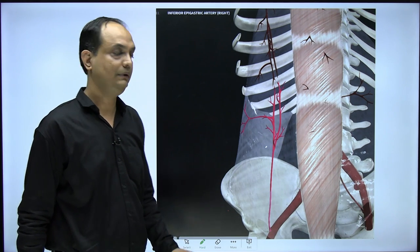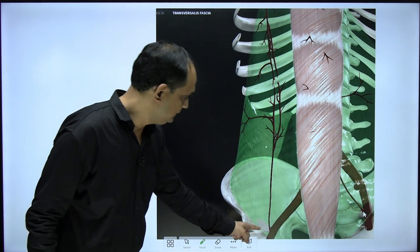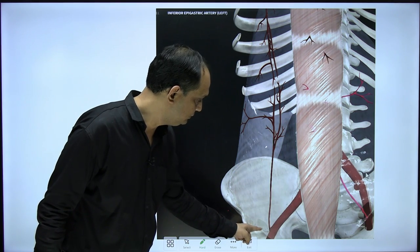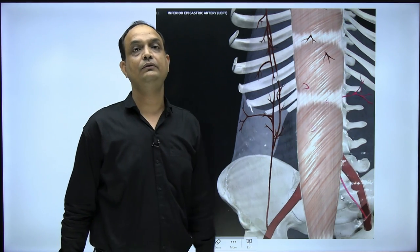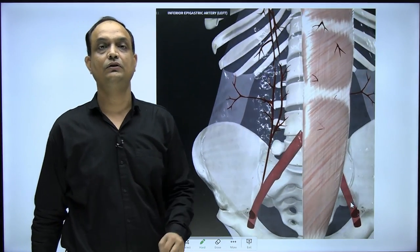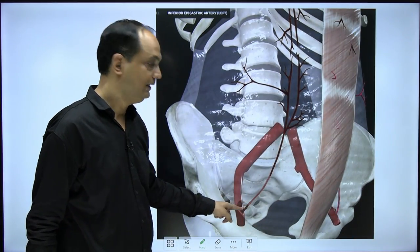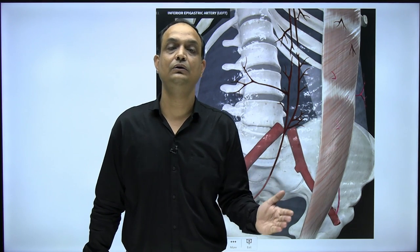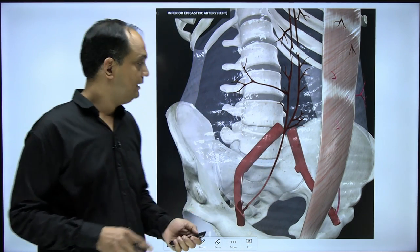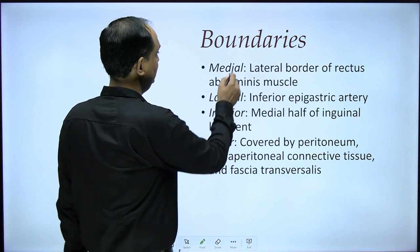The inferior epigastric artery is also a very important landmark because it defines the position of the deep ring — the deep ring lies just lateral to the inferior epigastric artery. Whenever we perform laparoscopic dissection of the lower anterior abdominal wall, we locate the deep ring just lateral to the pulsation of the inferior epigastric artery.